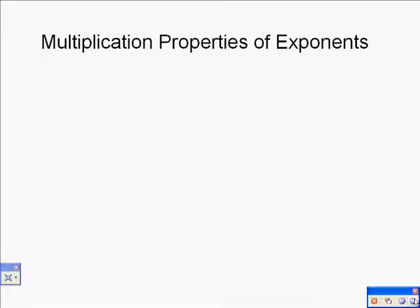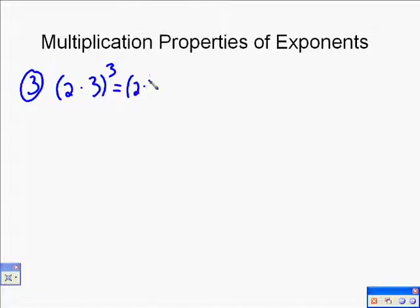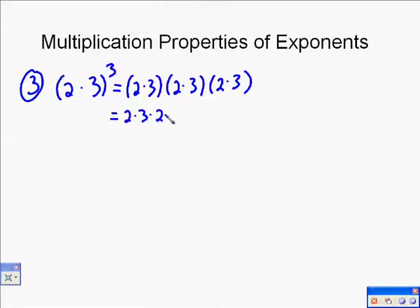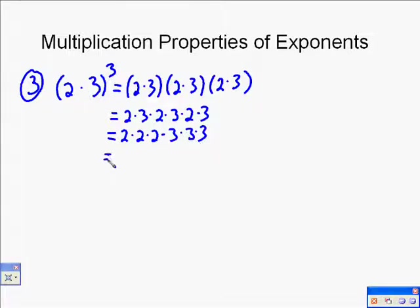The last property is a product raised to a power. For example, 2 times 3 in parentheses raised to the 3rd power. You might just multiply 2 times 3 to get 6 to the 3rd, and that works here — but we want a general shortcut. We can write 2 times 3 out three times, remove the parentheses using the associative property, and rearrange using the commutative property. We end up with 2 times 2 times 2 times 3 times 3 times 3, which equals 2 to the 3rd times 3 to the 3rd.